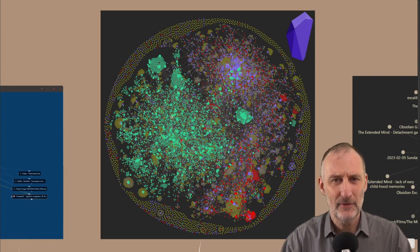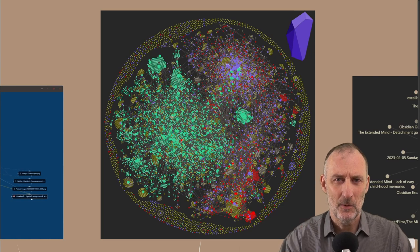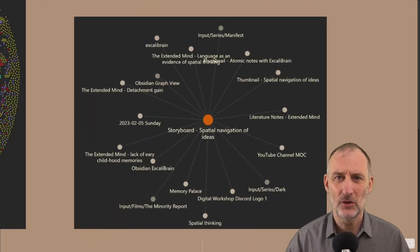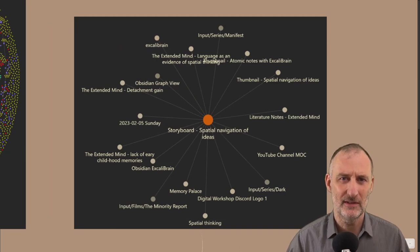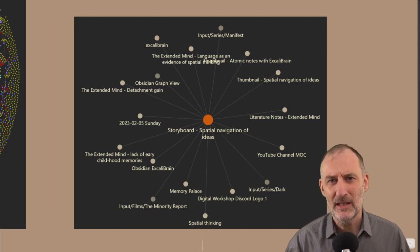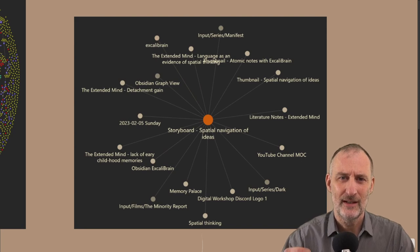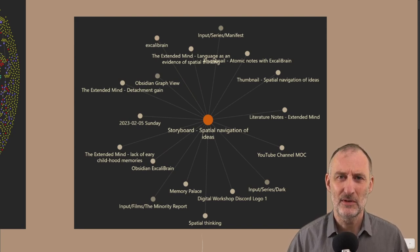Now, even though the graph view at the vault level is extremely helpful, I find the local graph view completely useless in Obsidian. Maybe if I have one or two links on a page, this is useful. But otherwise, unfortunately for me, this graph view is not very useful.